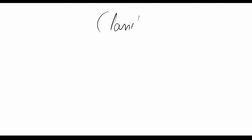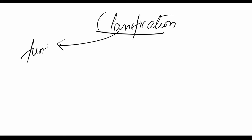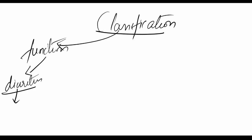Now, how are drugs acting on the renal system classified? Coming to classification, depending upon what they are doing — that is their function — they can be classified as diuretics, which are drugs that aim at increasing diuresis, that is increasing urine output, or anti-diuretics, which aim at reducing urine flow.